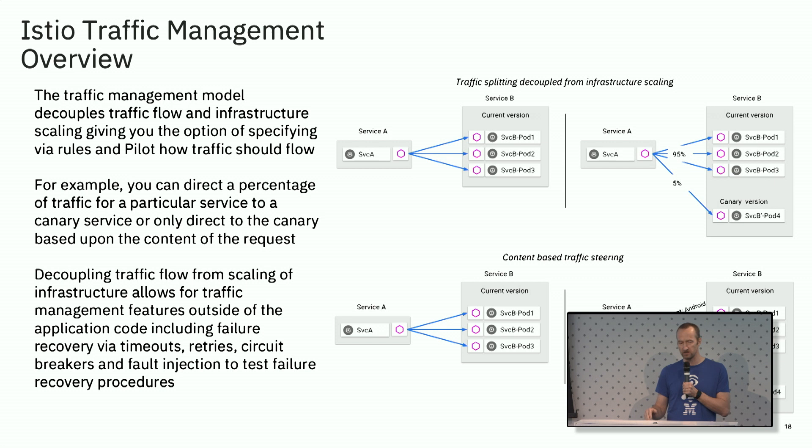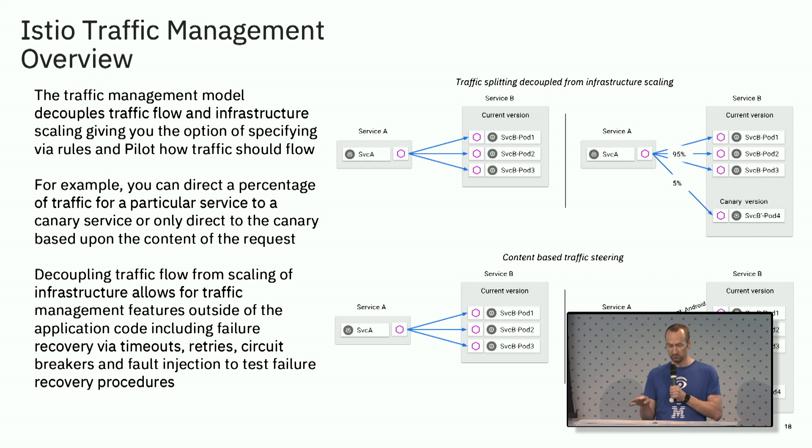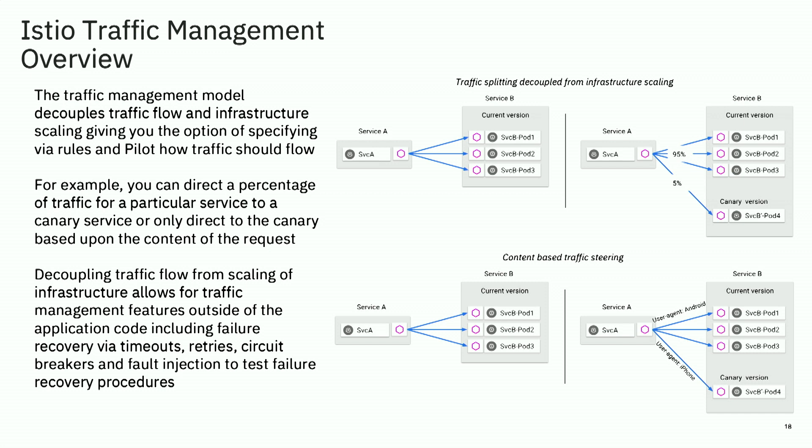So Istio has this very cool routing — I'm going to show it in a minute. If you have a new service and you'd like to check how it works, you can test it very easily. You can see various versions of the service. For example, I have this new canary service for iPhone — I'd like to check it out just on iPhone, and the rest will get what they were getting before.